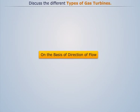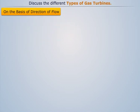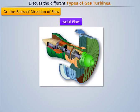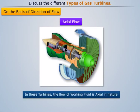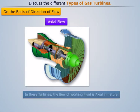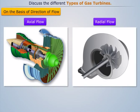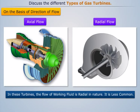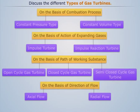On the basis of direction of flow, gas turbines can be divided into two types. Axial flow: in these turbines the flow of working fluid is axial in nature. Radial flow: in these turbines the flow of working fluid is radial in nature; it is less common. This summarizes the different types of gas turbines.